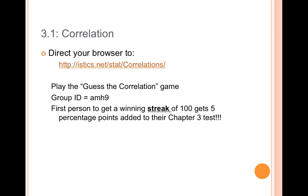What we're going to be doing is playing a game called Guess the Correlation. Don't start yet. Wait for me to explain how you play. We're actually going to play as a group under my group ID. So in a second, you're going to enter that ID. And my deal with you is that the first person from each class period to get a winning streak of 100 gets 5 percentage points added to their Chapter 3 test. I'll explain what that means in just a second.